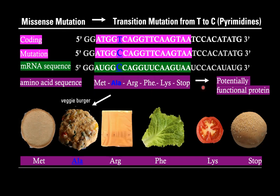Missense mutations could potentially be functional, but technically if you didn't want to eat this cheeseburger because you didn't like veggie burgers, you wouldn't have to, so that would be non-functional. But technically this is still edible, so you could eat it. This would be a transition mutation because thymine mutates to a cytosine, and they are both pyrimidines.